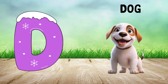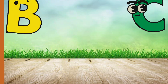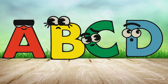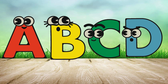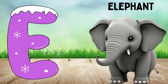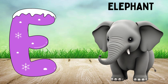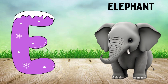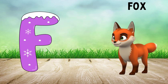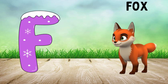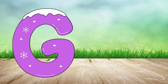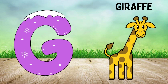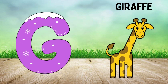D is for Dog. D, D. Dog. E is for Elephant. E, E. Elephant. F is for Fox. F, F. Fox.